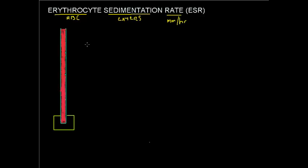To perform an ESR, or erythrocyte sedimentation rate, we collect blood in a tube called the Westergren tube — which is why this is also called the Westergren ESR. This tube has markings measured in millimeters, from zero at the top. These tubes are usually about 20 centimeters, or 200 millimeters, long, with markings at 50, 100, 150, and 200.